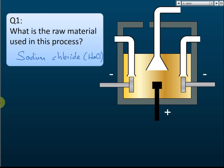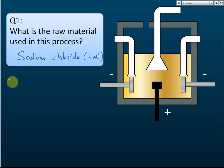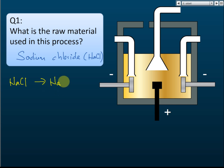For the electrolyte, we must heat the sodium chloride until it melts. So it is molten sodium chloride. If you heat sodium chloride, it will melt and form sodium ions and chloride ions.